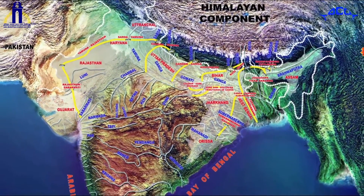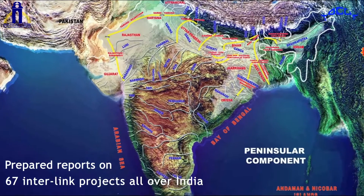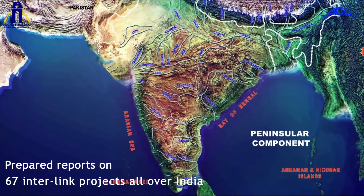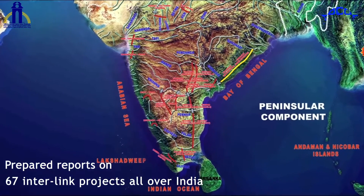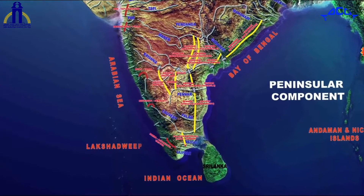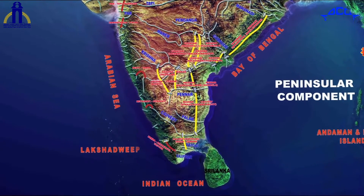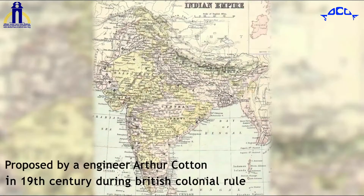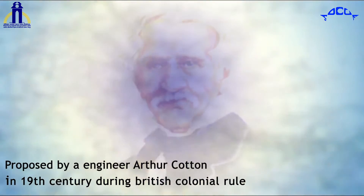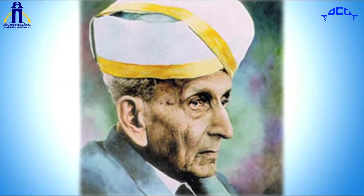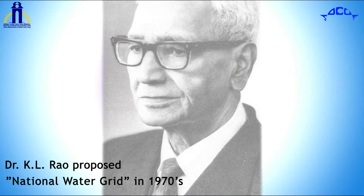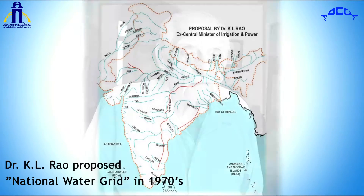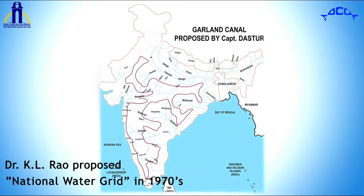NWDA has studied and prepared reports on 67 interlinked projects all over India. The proposal of interlinking of rivers in India has a long history. The plan to interlink major Indian rivers was proposed by an engineer, Arthur Cotton, in the 19th century during British colonial rule. After independence, a dam designer and former Irrigation Minister of India, Dr. KL Rao, proposed a National Water Grid in the 1970s.